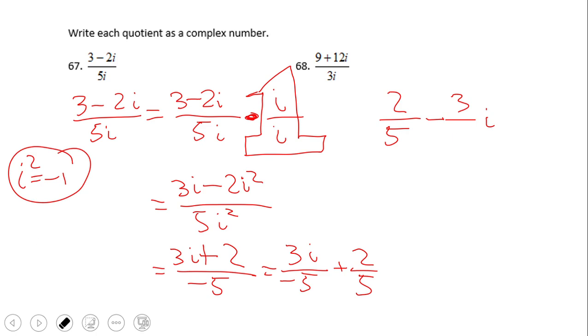2/5 minus 3/5i. Okay, so the answer for the first problem is 2/5 minus 3 over 5, 3/5 i. Always you can have the answer in this format of a real part, in this case 2/5, and imaginary part, in this case negative 3/5. Pause this video clip and go and try to do number 68.